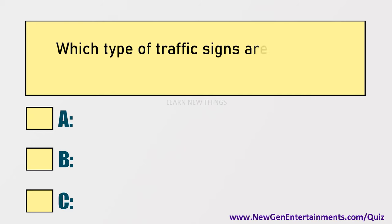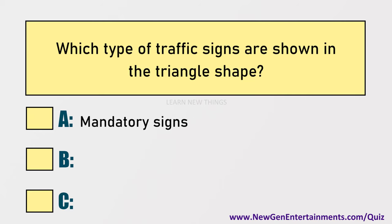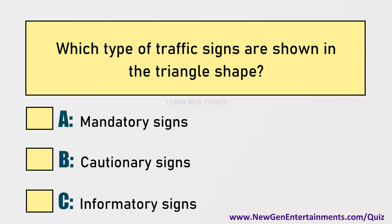Which type of traffic signs are shown in triangle shape? Options are: A) Mandatory signs, B) Cautionary signs, C) Informatory signs.